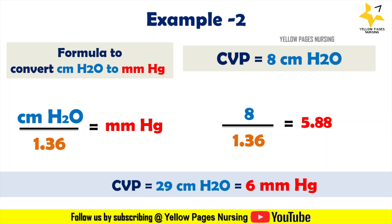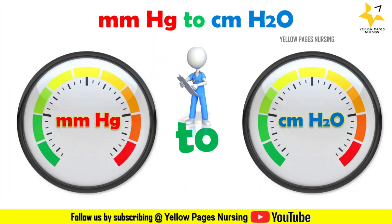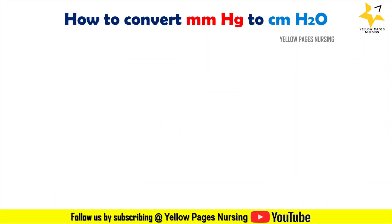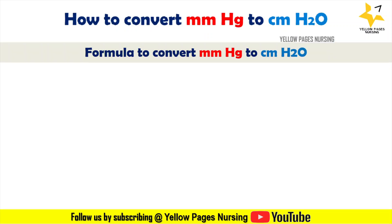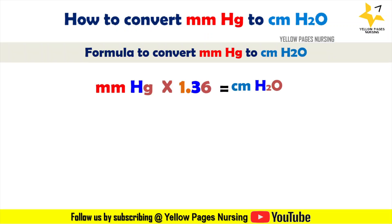Next comes the conversion of mmHg to centimeter H2O. The formula is: mmHg multiplied by 1.36 equals centimeter H2O.